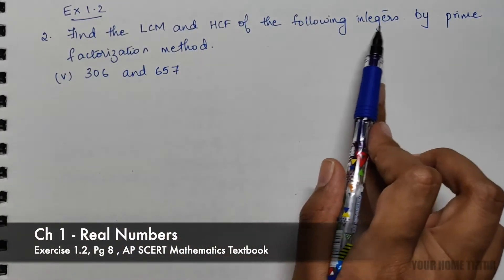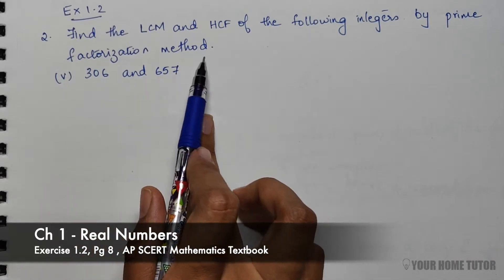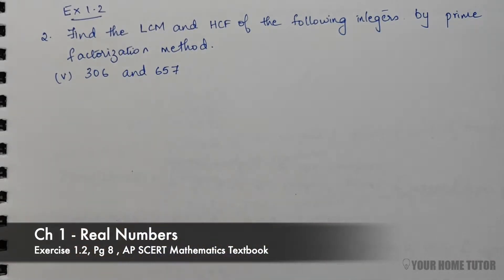Find the LCM and HCF of the following integers by prime factorization method for the numbers 306 and 657.